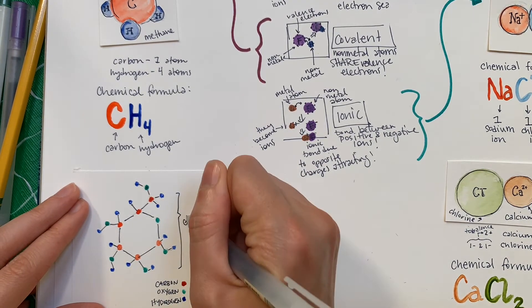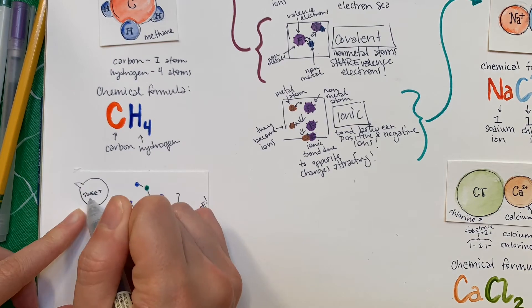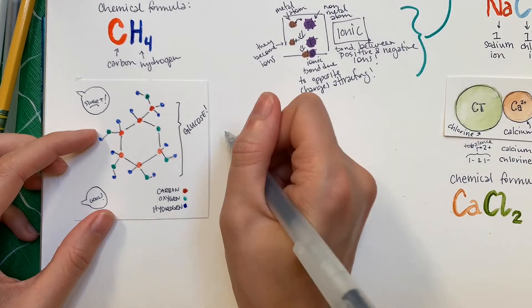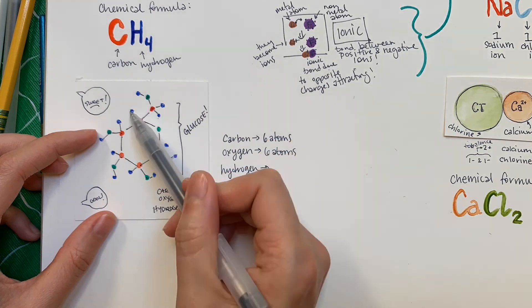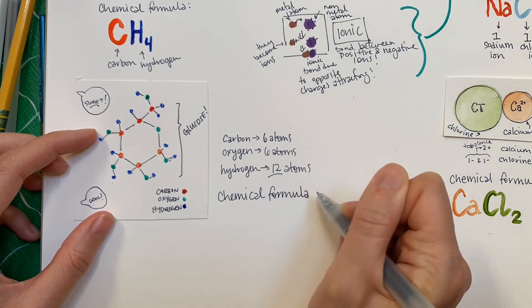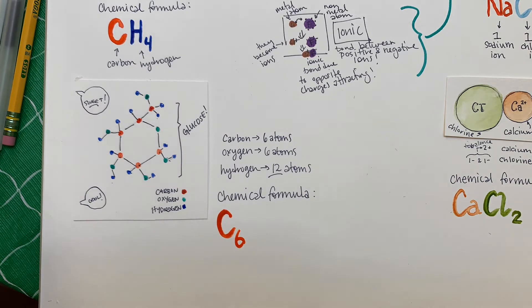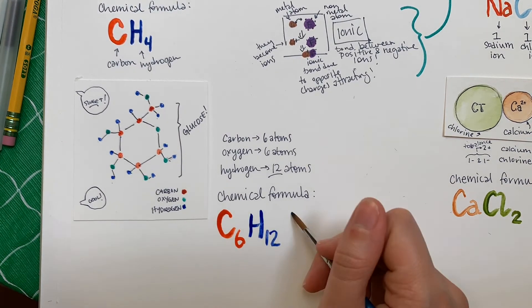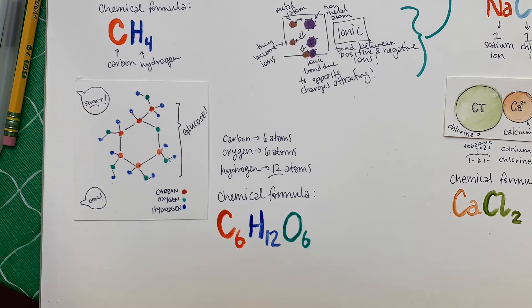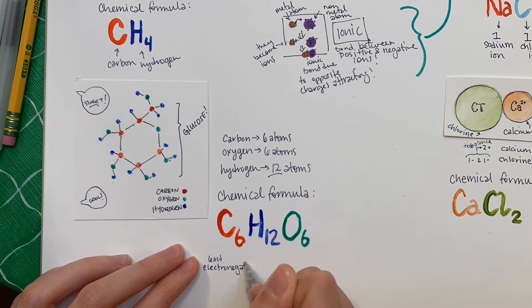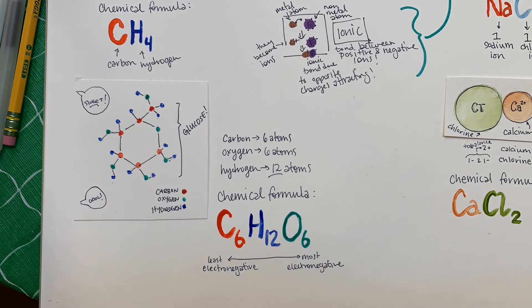To write the chemical formula for this molecule, we would have to include each of these elements and their amounts when making the chemical formula. That means that the chemical formula for glucose is C6H12O6. We write the elements in that order because, like in ionic compounds, scientists have a specific way of ordering the elements. In the case of covalent compounds, we order them from the least electronegative to the most electronegative.